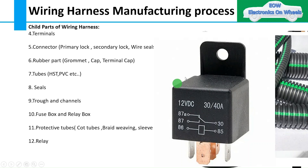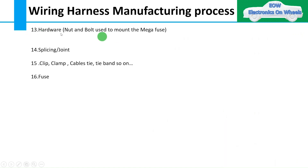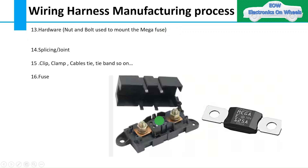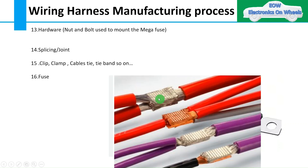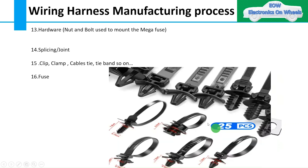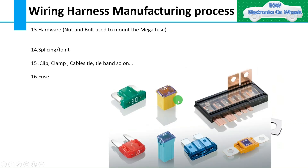Next is relay. One important thing to note is that relay and relay box or holder are different components. The next component is different hardware parts like nut and bolt, which are used in the harness — for example, to fix mega and midi fuses you need nut and bolt. Then we have splice, joint, and wiring harness connections, which are used to join two or more wires. Coming to clips, clamps, and cable ties, which are used to fix the wiring harness. And last but not least, that's fuse. As explained earlier, fuse box and fuse are two different components in a wiring harness.